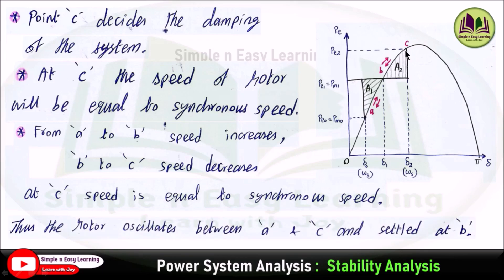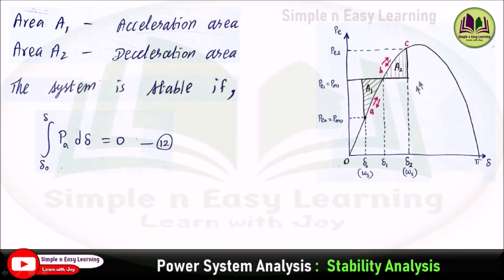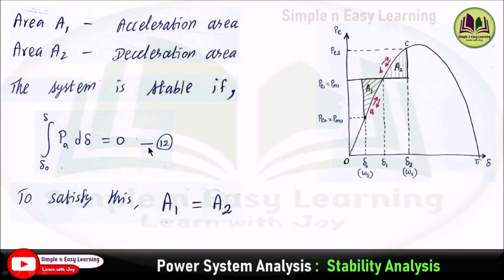The rotor oscillates between A and C and finally settles down at point B (the new equilibrium). The region A to B is the accelerating area (area 1) and B to C is the decelerating area (area 2). As per the stable condition, area 1 equals area 2. The system is stable if the integral of Pa d(delta) from delta-0 to delta-2 equals zero, which requires equating the two areas.